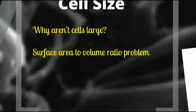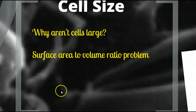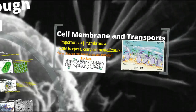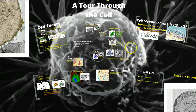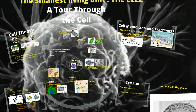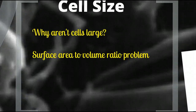And that brings us to our final discussion: cell size. The question is, why aren't cells large? It turns out it has to do with a math problem — the surface area-to-volume ratio problem. The surface of the cell has to handle all the needs of the volume. So as a cell gets larger, its volume increases and so does its surface area, but its metabolic needs and traffic in and out will increase across the cell membrane.